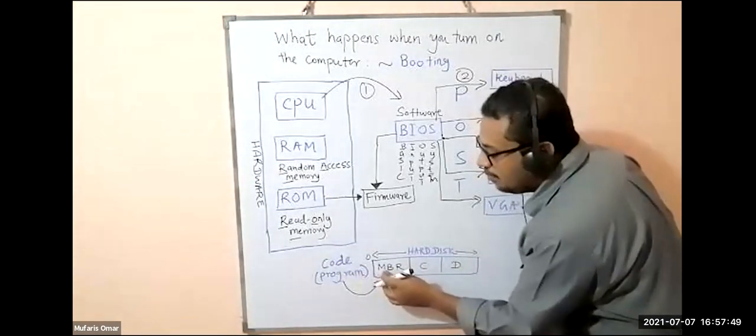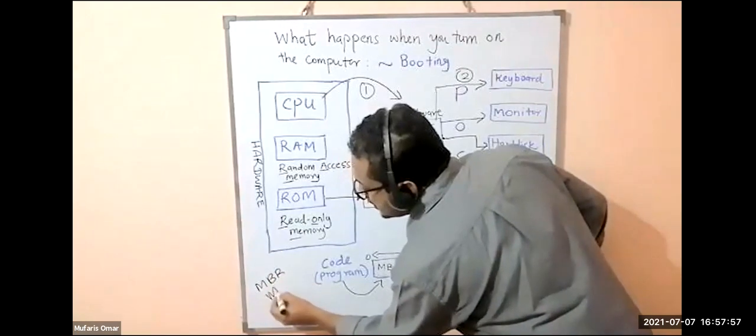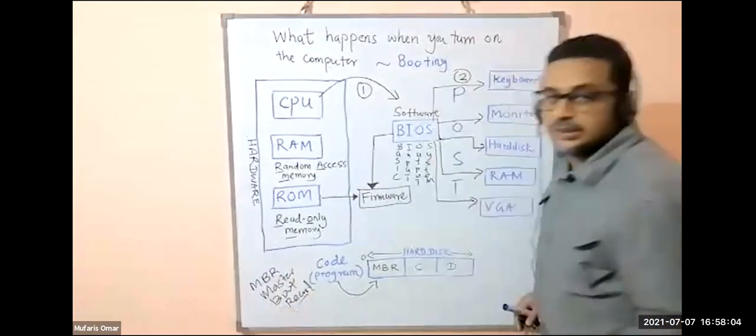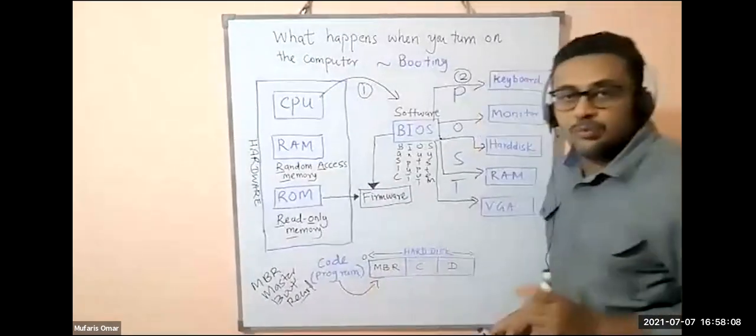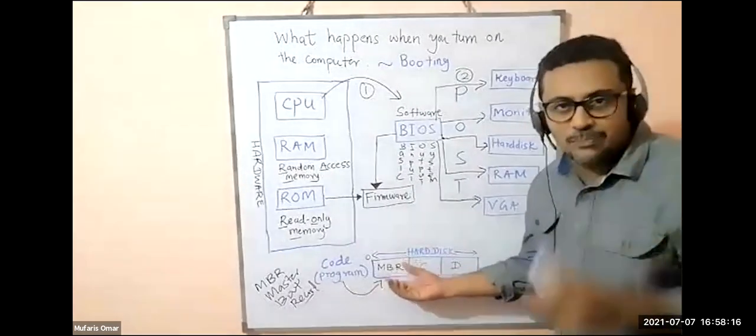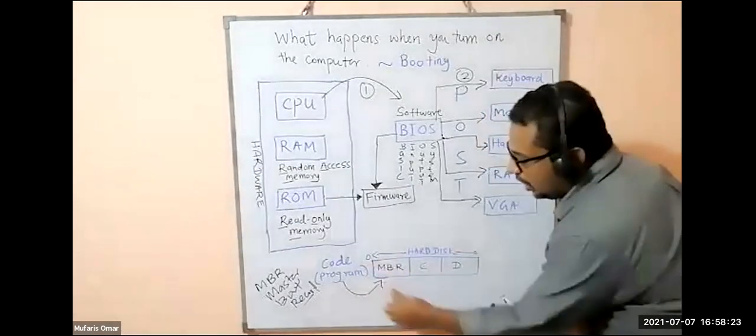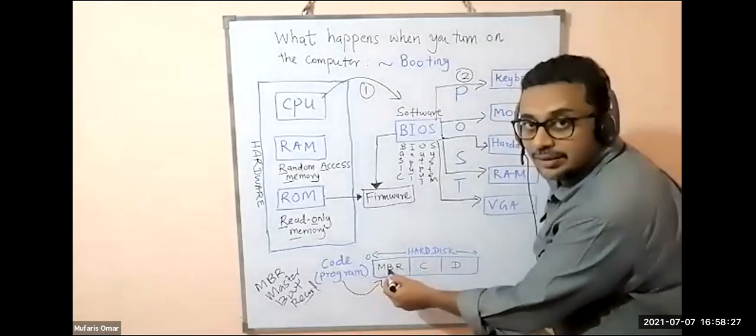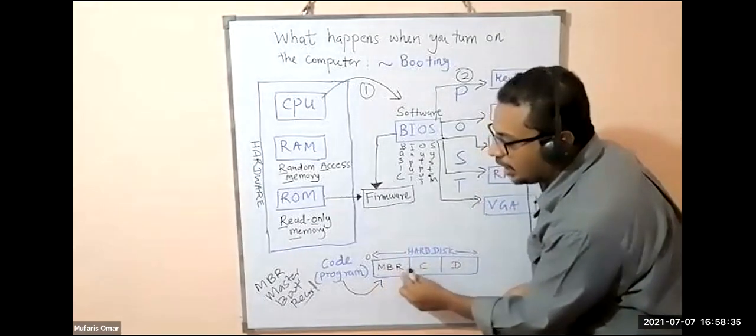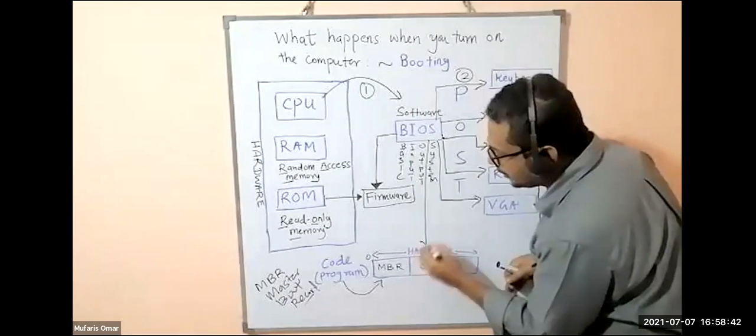A code called MBR—Master Boot Record. In the hard drive, the initial part, they have selected the initial part of the hard drive. This is the whole hard drive. In the initial part, in that sector, there is a software, a code, a program called MBR—Master Boot Record. The next step, BIOS will load this program. This is the third step.